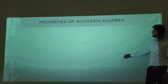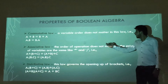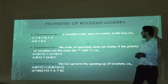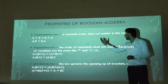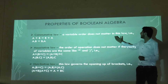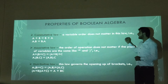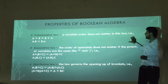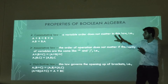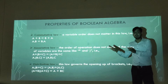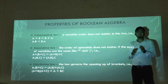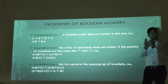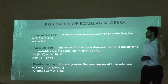The next property is the commutative law. The order of variables does not matter in this law. That is, a plus b equals b plus a, and a dot b equals b dot a.